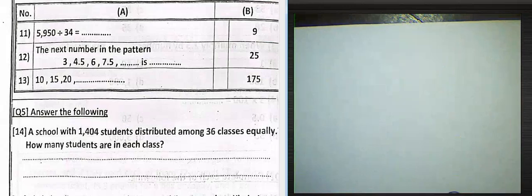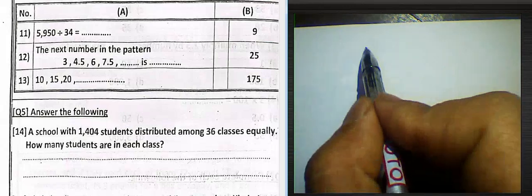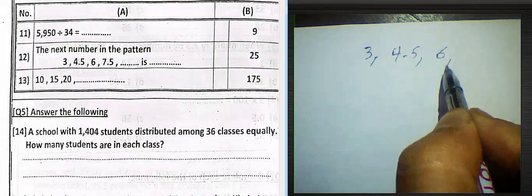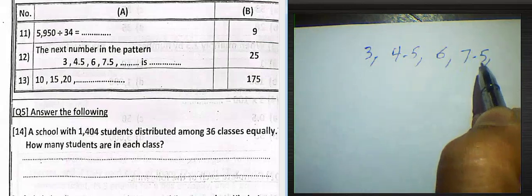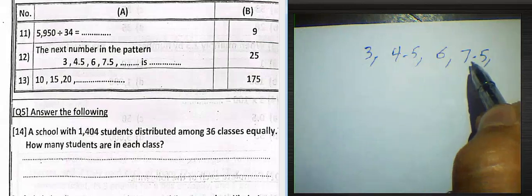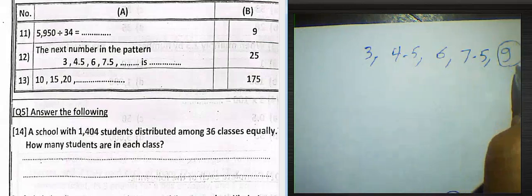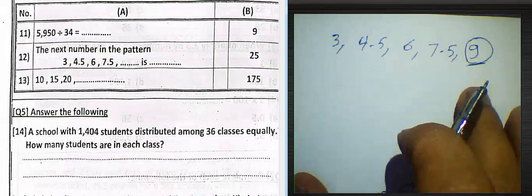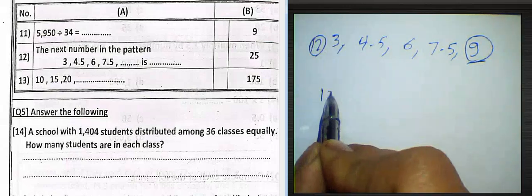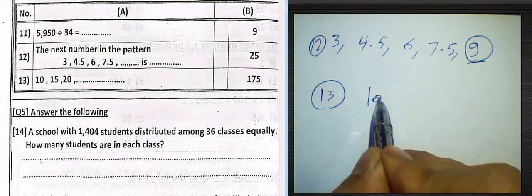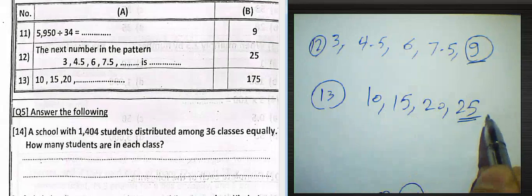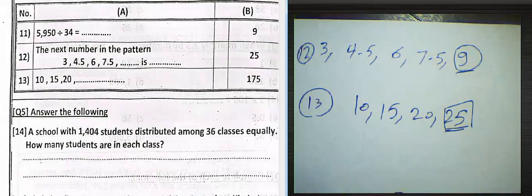Next one here. The next number is the pattern 3 and 4.5 and 6 and 7.5. We can add 1.5, so this number will be 9. The next pattern here about question 12 is 9. We must write here about question 12. Question 13: 10, 15, 20, 25. We must write here 25 about question 13.